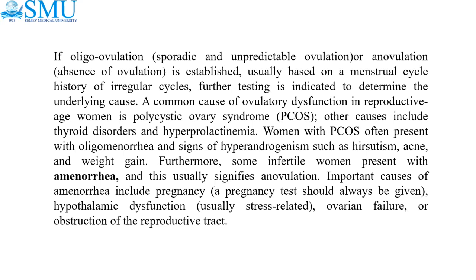If oligo-ovulation — sporadic and unpredictable ovulation — or anovulation, absence of ovulation, is established usually based on a menstrual cycle history of irregular cycles, further testing is indicated to determine the underlying cause. A common cause of ovulatory dysfunction in reproductive age women is polycystic ovary syndrome, PCOS.